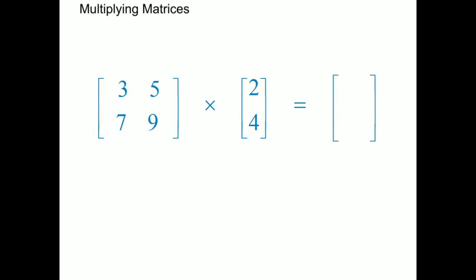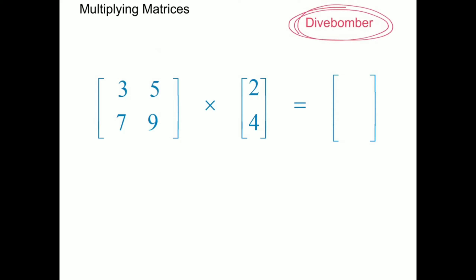Multiplying matrices. In this example we're going to be multiplying a 2 by 2 matrix with a 2 by 1 matrix, and we're going to be using a process which I call dive bomber. In this process, each of the rows of the first matrix — row 1, row 2 — comes across and dive bombs the columns of the second matrix.